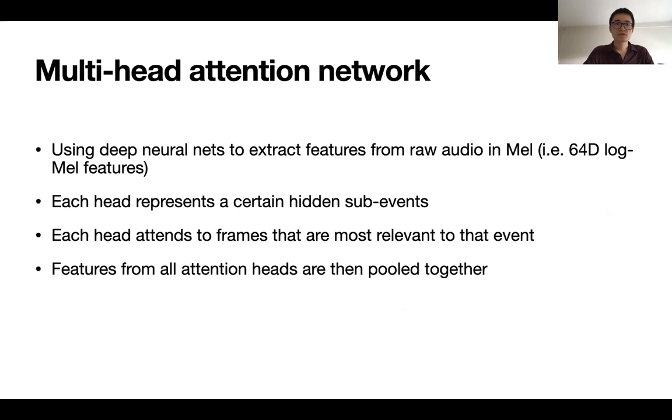So the multi-head attention network we propose in this paper is using a deep neural net to extract features from raw audios in Mel spectrogram. Basically, it's a 64-dimension log-Mel features. And after that, each head of the multi-head attention represents certain hidden sub-events, which are learnable. And each head attends to frames that are most relevant to that particular event based on dot product. And the features from all heads are then pooled together, which will then be passed to a fully connected layer.